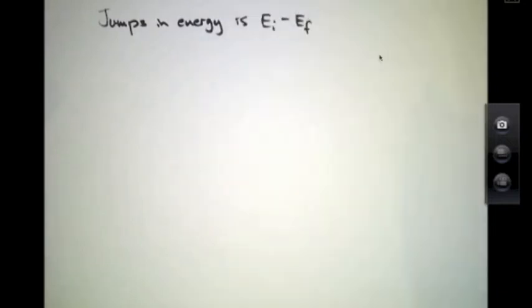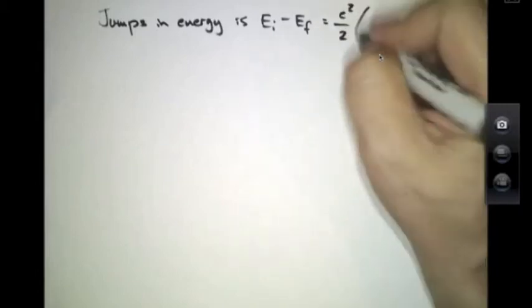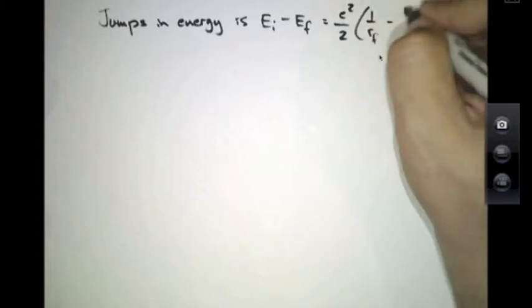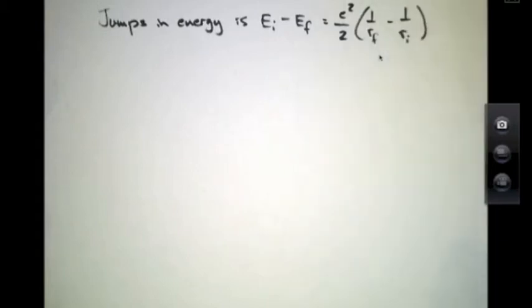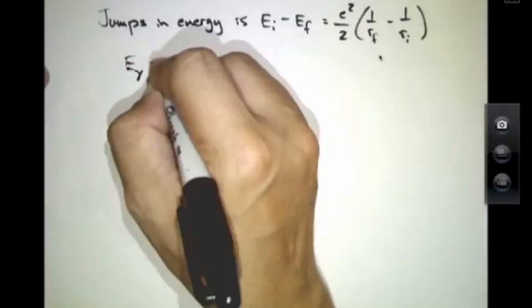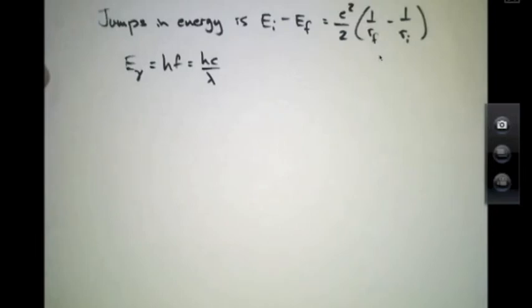A jump in energy is one in which the atom goes from a state of initial energy E_I to an energy E_F, and this will equal, because of the minus sign, e squared over 2, times 1 over the final radius minus 1 over the initial radius. That should equal the energy of the photon given by either h times the frequency or hc over the wavelength.